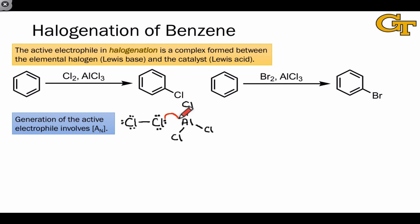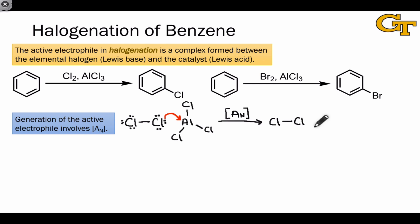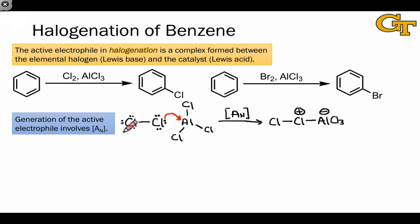Through electron flow — which according to our nomenclature would be an A sub N, or association of a nucleophile to an electron-deficient atom step — we end up with the Lewis acid-Lewis base complex. One of the chlorine atoms, acting as a Lewis base, has donated a pair of electrons and become positively charged to the aluminum atom, which, in accepting the pair of electrons, is now negatively charged with four bonds total and four formal electrons. From the curved arrow alone, we can recognize Cl2 acting as a Lewis base and AlCl3, in accepting the electron pair, acting as a Lewis acid.